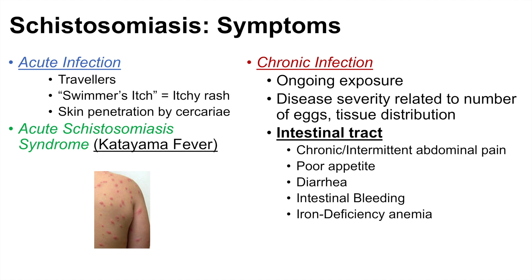Depending on how many eggs there are in the intestinal tract, we can see different types of symptoms. These include chronic or intermittent abdominal pain, poor appetite, diarrhea, and intestinal bleeding. The diarrhea and intestinal bleeding can lead to iron deficiency anemia.